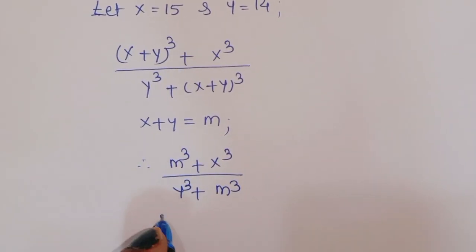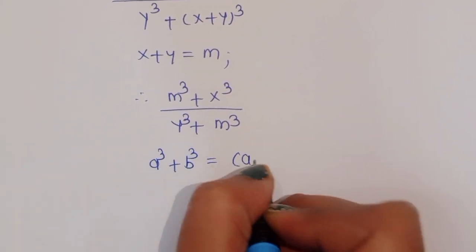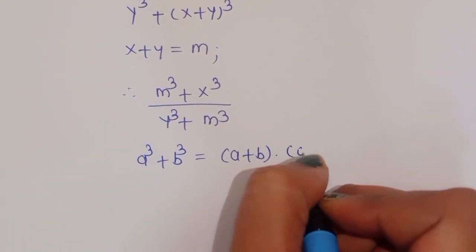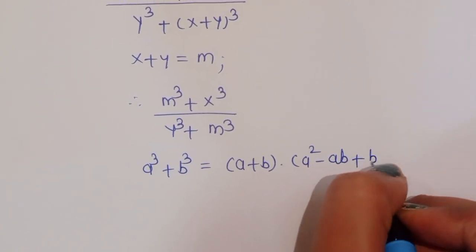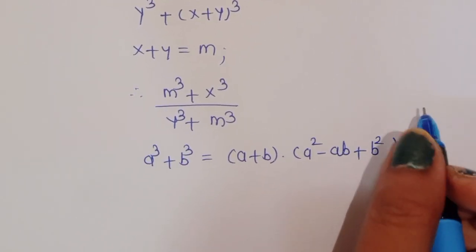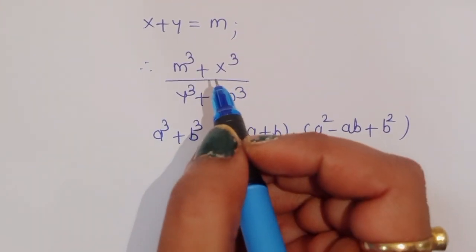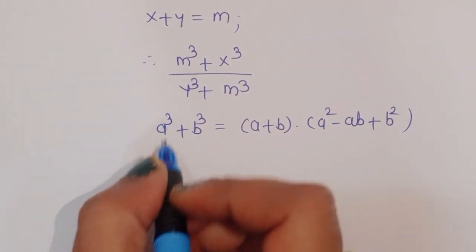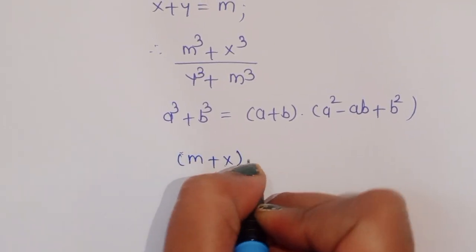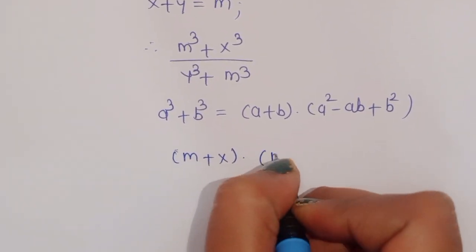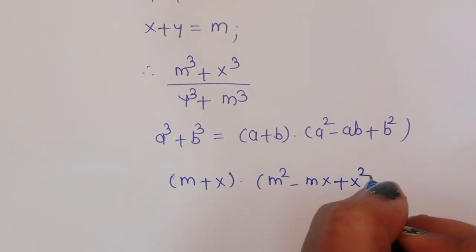We know the formula: a³ + b³ = (a+b)(a² - ab + b²). Applying this formula to the numerator: m³ + x³ = (m+x)(m² - mx + x²).